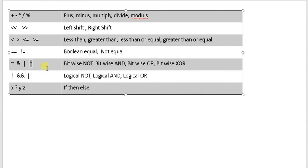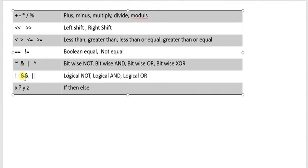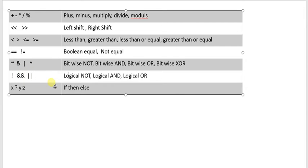These are similar to the symbols we have learned in hardware description languages like Verilog. The logical operators represent not, double-and, and double-or for logical AND and logical OR. Lastly, there is the if-then-else, which is similar to the conditional operator: if condition x is true, evaluate as y, else evaluate as z.